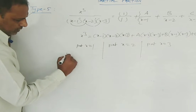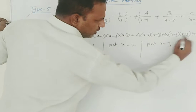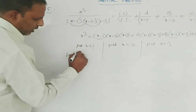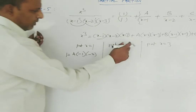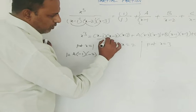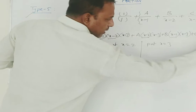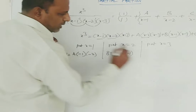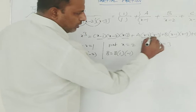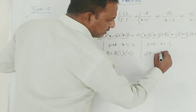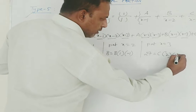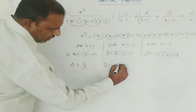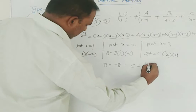When x equals 1: the first term becomes 0, b and c terms become 0, leaving 1 equals a times minus 1 times minus 2, so a equals 1 by 2. When x equals 2: this gives 8 equals b times 2 minus 1 times 2 minus 3, so b equals minus 8. When x equals 3: this gives 27 equals c times 2 times 1, so c equals 27 by 2.